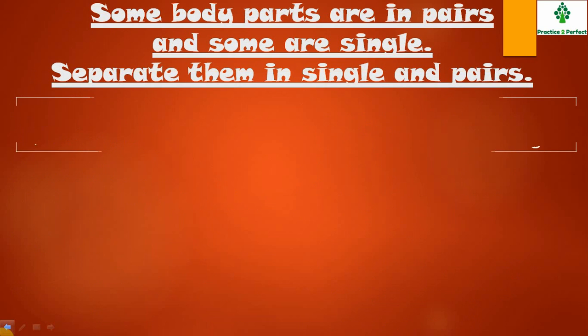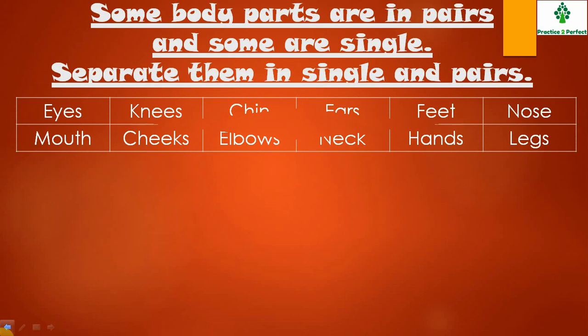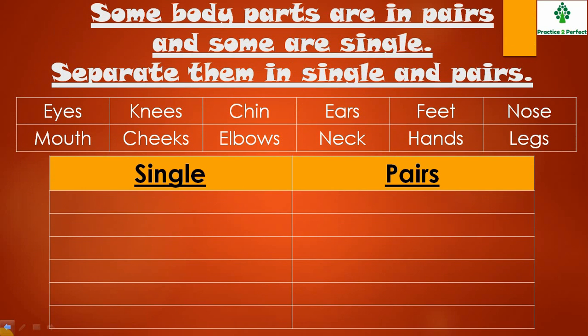Moving to the next question. Some body parts are in pairs and some are single. Separate the listed body parts accordingly under the single and pairs column. For example, eyes are in pairs but chin is single.